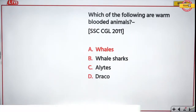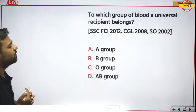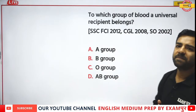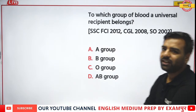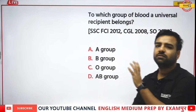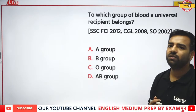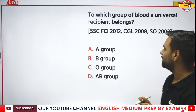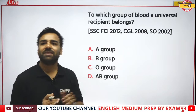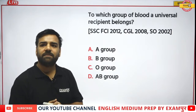The next question: to which group of blood does a universal recipient belong? Let's discuss. Some answered C, some answered D — AB group. We have a 50-50 split, so let's discuss.